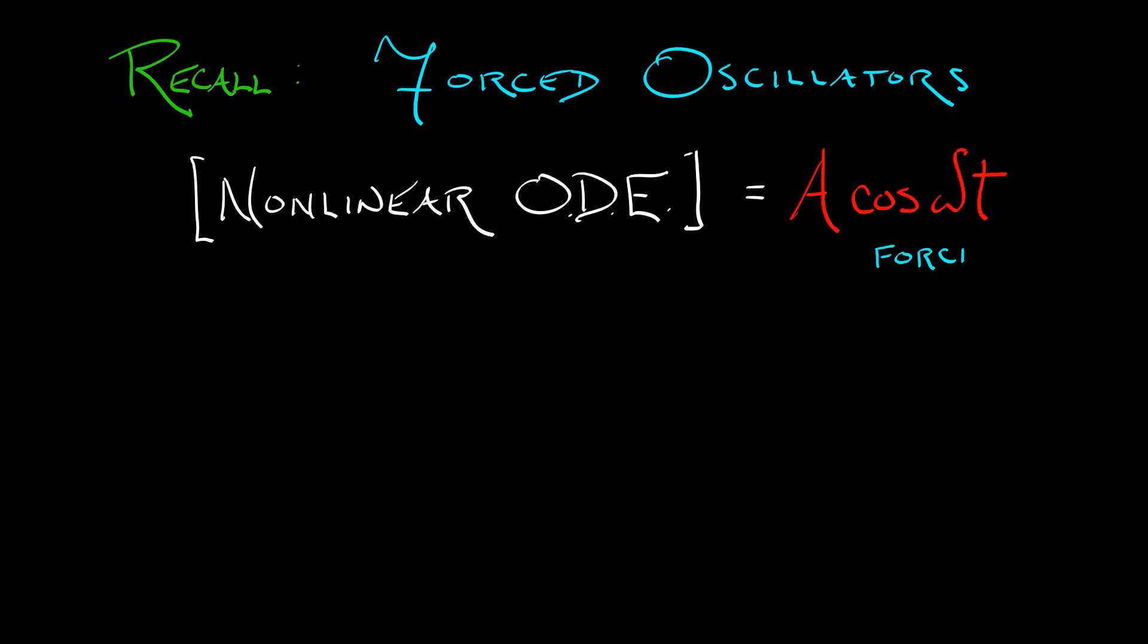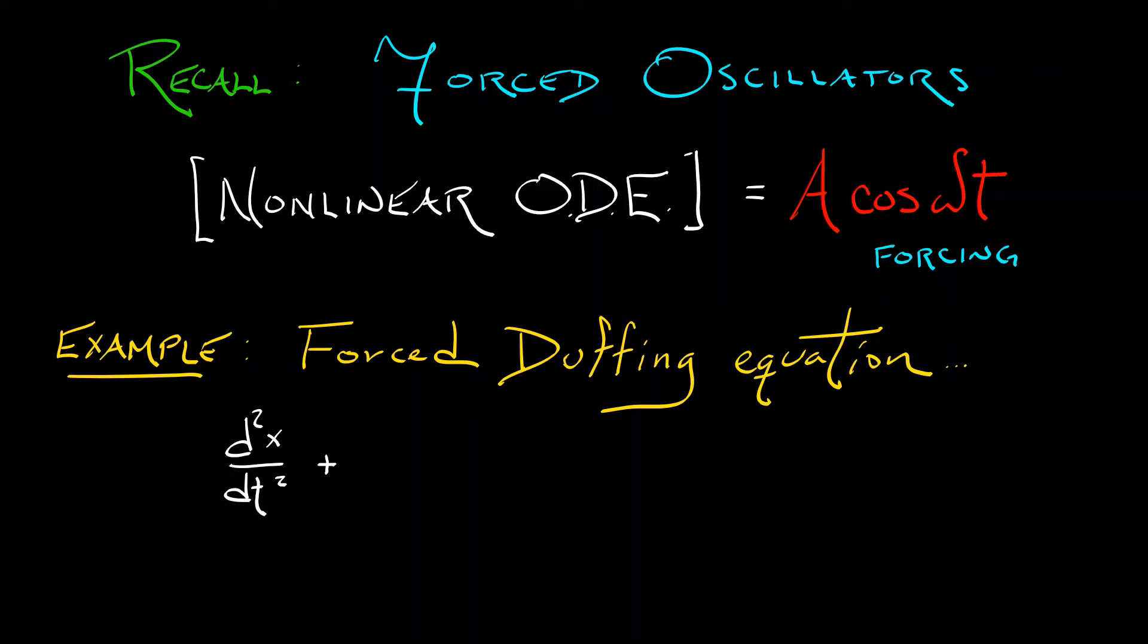This is kind of like what we did with the bouncing ball problem, where we have that base, that table, being periodically forced. The example that we're going to look at here that I want to recall to mind is the forced duffing equation. Remember back in Volume 2, when we looked at the duffing equation, this was given by the second derivative of x with respect to time, plus some constant delta, times dx dt, minus x plus x cubed.